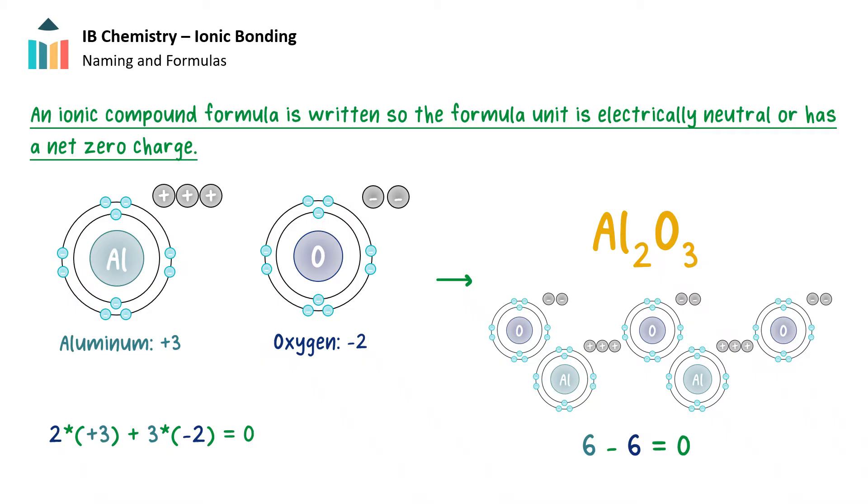So we can think in terms of a valid mathematical equation: 2 times +3 plus 3 times -2 equals 0. So there is no net charge within the formula unit. Therefore, the formula unit has two aluminum ions and three oxygen ions and the formula is Al2O3.